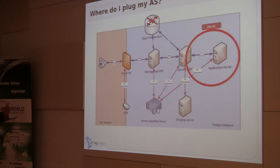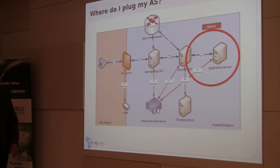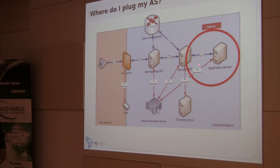So where exactly do we plug in? The application server sits next to the S-CSCF. It must be connected to that piece of the IMS infrastructure via SIP — this connection is mandatory. Optionally, it can also be connected to the HSS server, but only if the application server is part of the home network. The SIP connection to the S-CSCF is required; the HSS connection is optional.